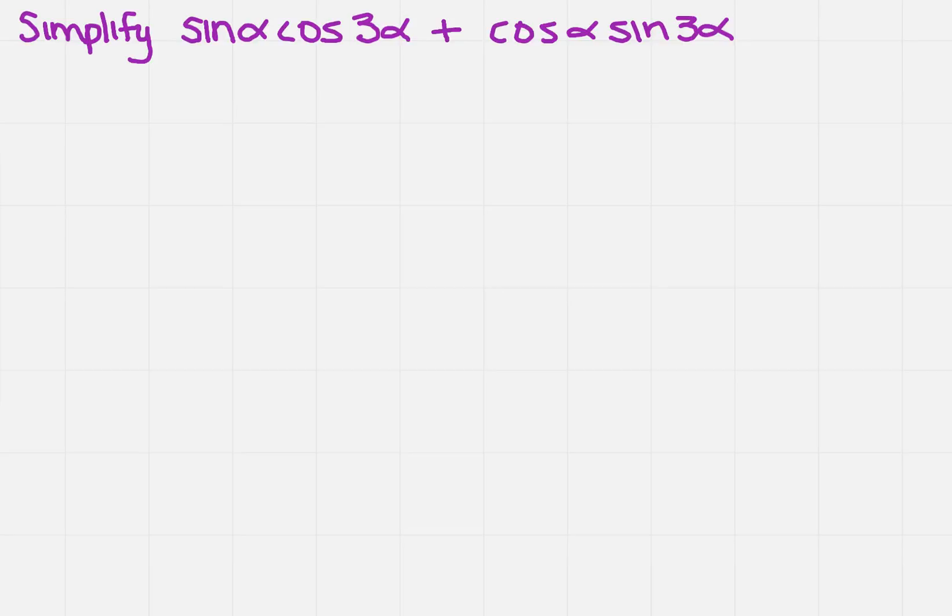And so what does that tell me? It's a plus because I said it was a sum. So it's going to tell me sine of... Now, what you need to do, since it's a sum, is figure out what are the two different angles that you have. You have alpha and you have 3 alpha.